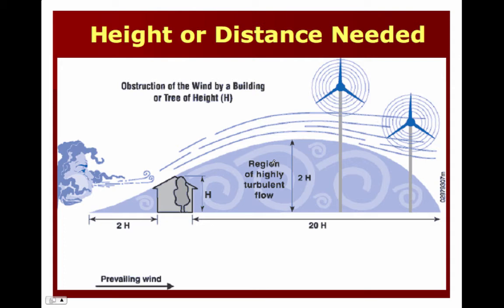Wind turbines need to be tall — they need to be up above the turbulent part of the atmosphere. The turbulent effect behind an obstruction like a building or tree extends to about 20 times the height of the object and about 2 times the height of the object upwind. You want to be in smooth winds. Also, the friction of wind blowing across the ground slows down the air close to the ground — much slower than air high above. Sometimes you can double the output of a wind turbine by just moving it up 30 or 40 feet, getting a slightly higher wind speed. And again, since energy production is related to wind velocity cubed, even a small amount of additional wind speed makes a big difference.